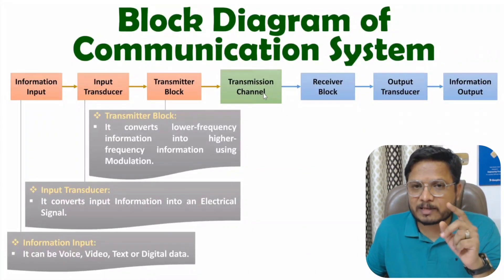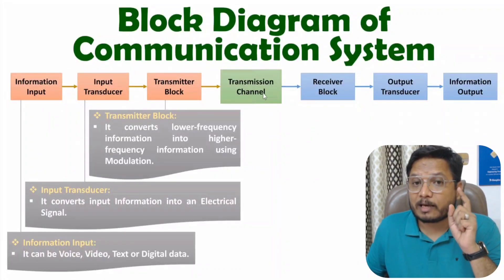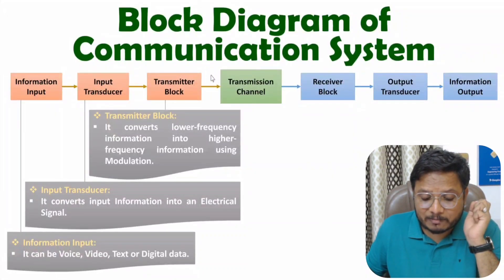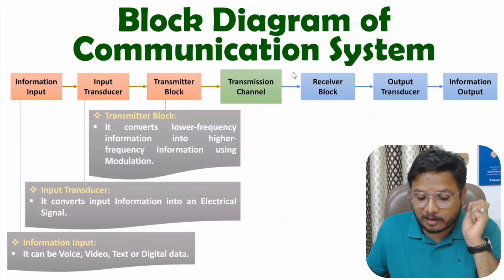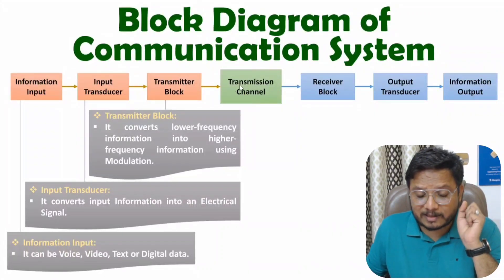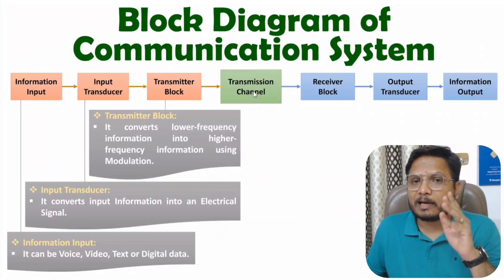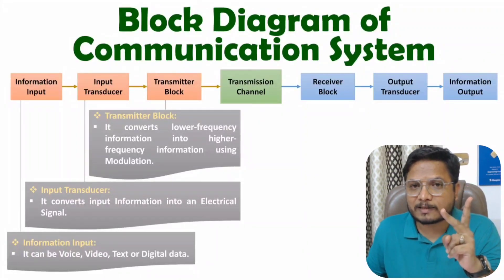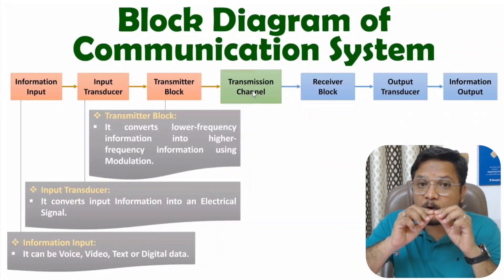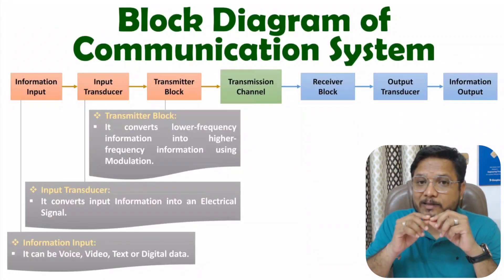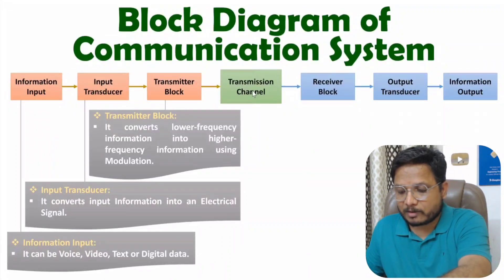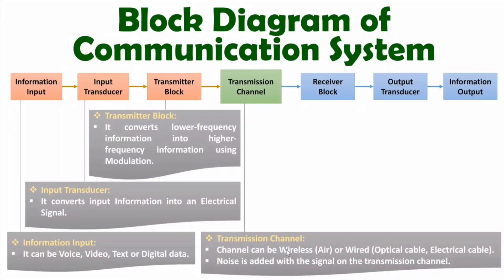As mentioned, the transmission channel can be wireless or wired. If we have a wireless transmission channel, there will be an antenna, and with the use of that antenna we can transmit electromagnetic waves to the receiver, which has its own antenna for receiving electromagnetic waves. In a wired transmission channel there can again be two categories: optical and electrical. In the case of an optical channel, there will be an optical fiber cable connection between sender and receiver.